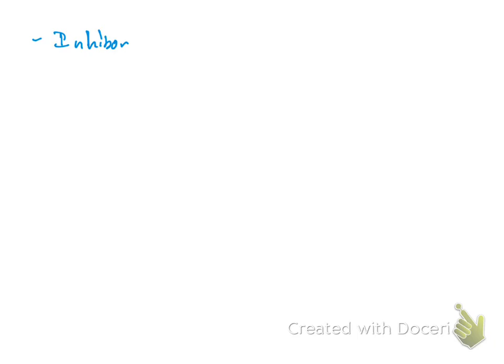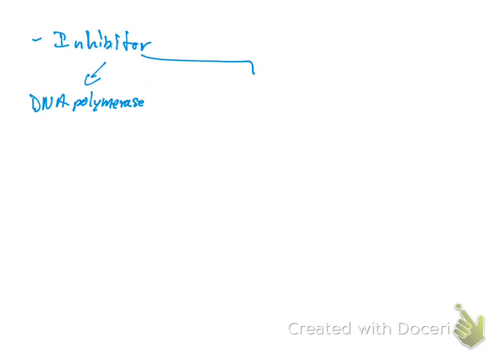Foscarnet is going to directly inhibit — so it is an inhibitor — of two things. The first enzyme it inhibits is DNA polymerase. Remember, each time you see '-ase,' that means it is an enzyme. The second enzyme it inhibits is reverse transcriptase.